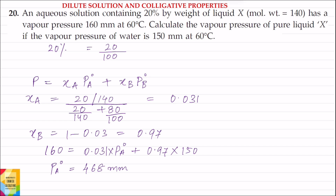Question 20: An aqueous solution containing 20% by weight of liquid X, molecular weight equals 140, has a vapor pressure of 160 mm at 60 degrees centigrade. Calculate the vapor pressure of pure liquid X if the vapor pressure of water is 150 mm at 60 degrees centigrade.